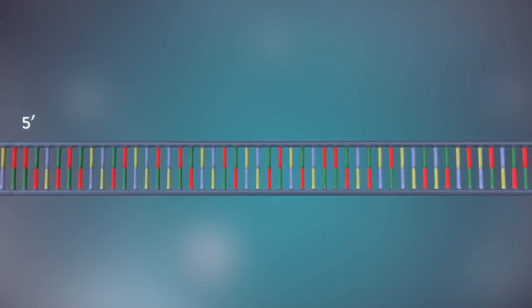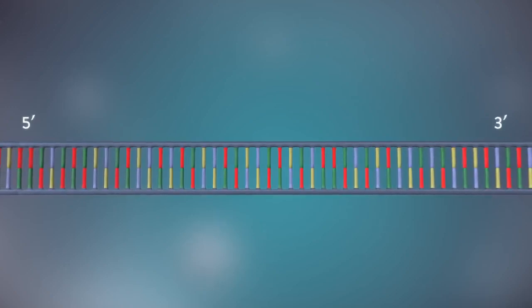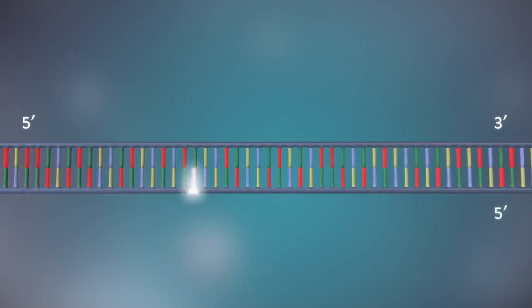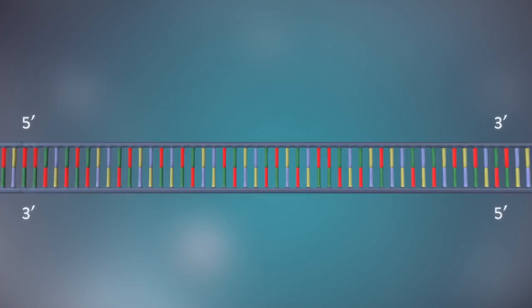Each strand has a 5' end and a 3' end. The two strands run in opposite directions. This determines how each strand of DNA is replicated.